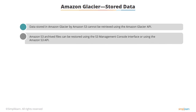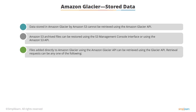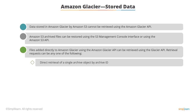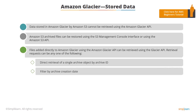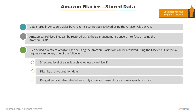Amazon S3 archived files can be restored using the S3 Management Console or the Amazon S3 API. Files added directly to Amazon Glacier using the Amazon Glacier API can be retrieved using the Glacier API. Retrieval requests can be any one of the following: direct retrieval of a single archive object by archive ID, filter by archive creation date, ranged archive retrieval, or retrieve only a specific range of bytes from a specific archive. You can poll for job completion using the Describe Job API function, and Amazon Glacier completion notifications can also be sent using Amazon Simple Notification Service, or SNS. Once an Amazon Glacier job has finished executing, the user can request a download of their thawed data.